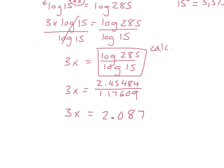Now to get x by itself, since x is being multiplied by 3, we're going to divide both sides by 3. It's going to cancel out on the left. In our calculator, we're going to divide 2.087 by 3, and we get 0.696.